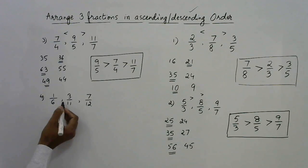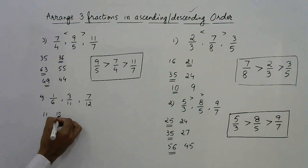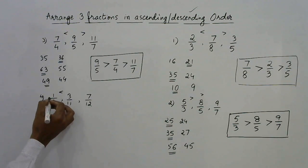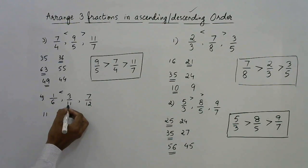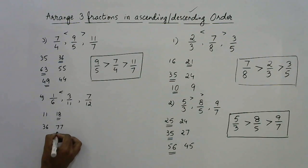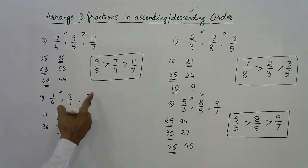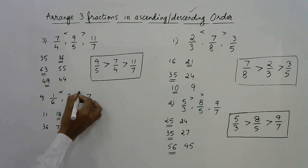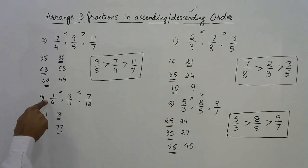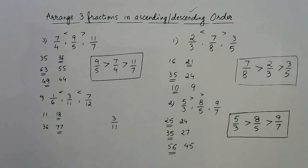Final question with 1/6, 3/11, and 7/12. Comparing the first two: 1 × 11 = 11 and 3 × 6 = 18. Since 18 is greater on the right side, 3/11 is greater than 1/6. Now compare 3/11 and 7/12: 3 × 12 = 36 and 7 × 11 = 77. Since 77 is greater on the right, 7/12 is greater than 3/11. Since 3/11 is between the other two, it clearly comes in the middle.